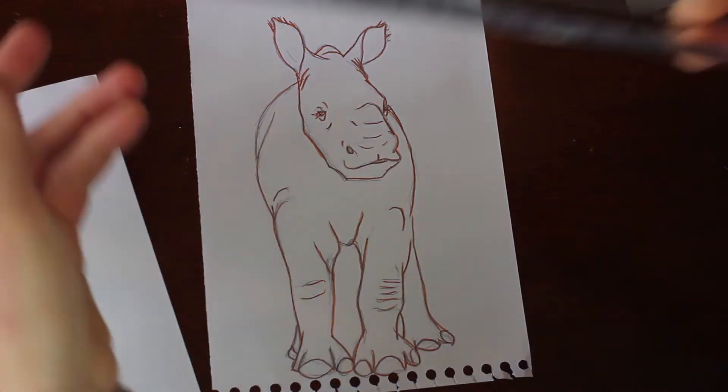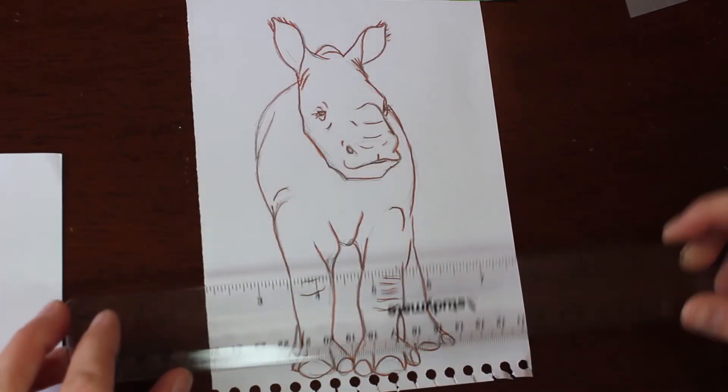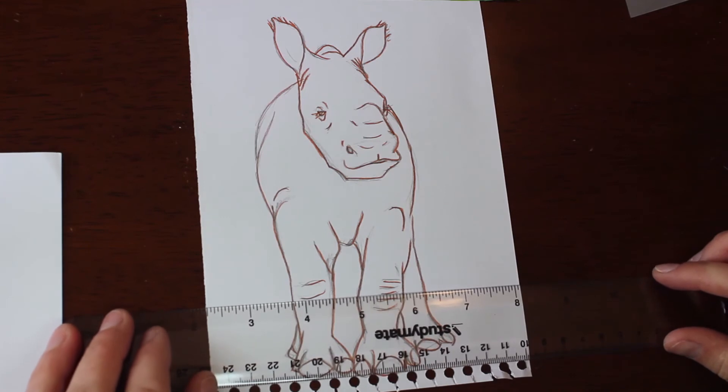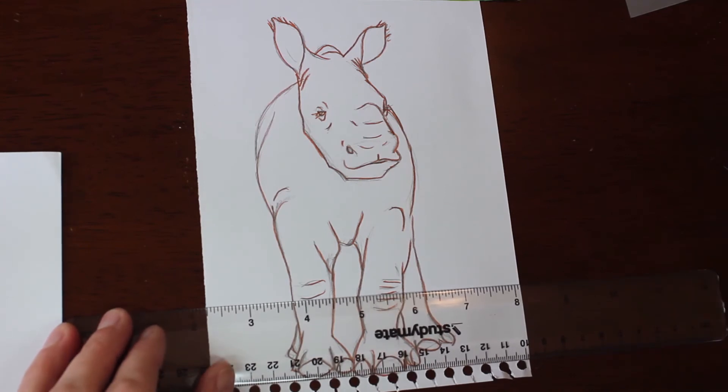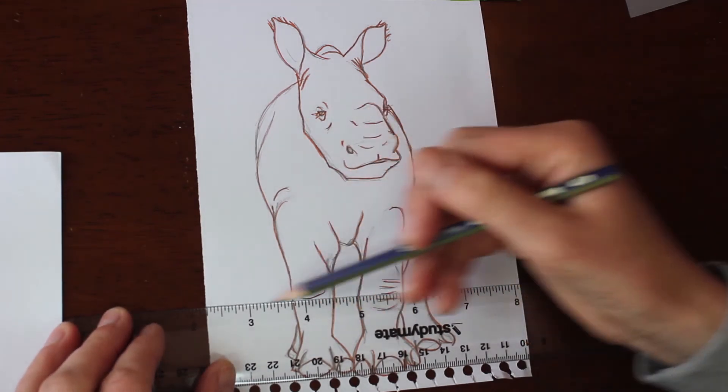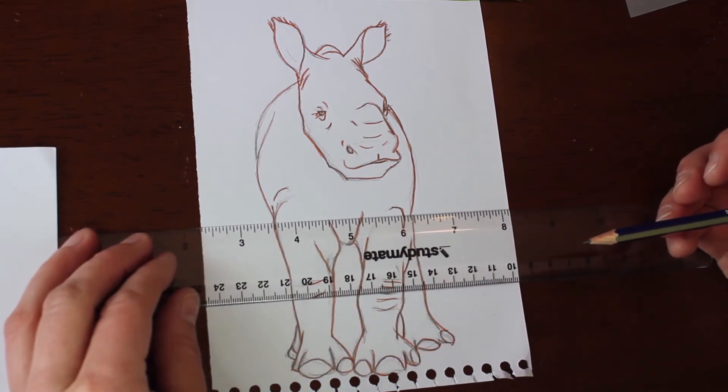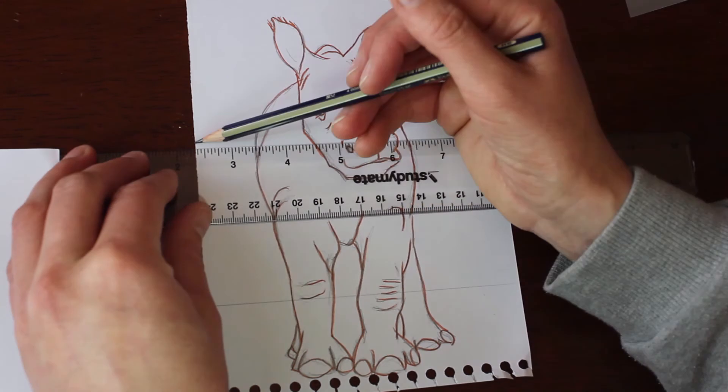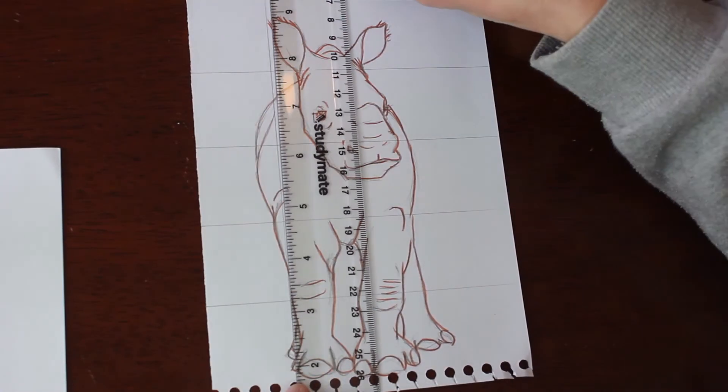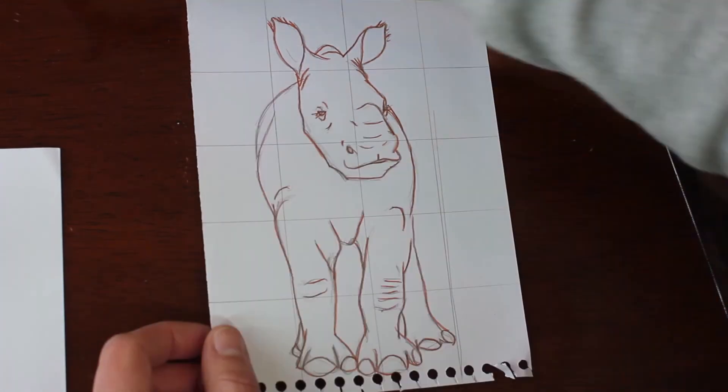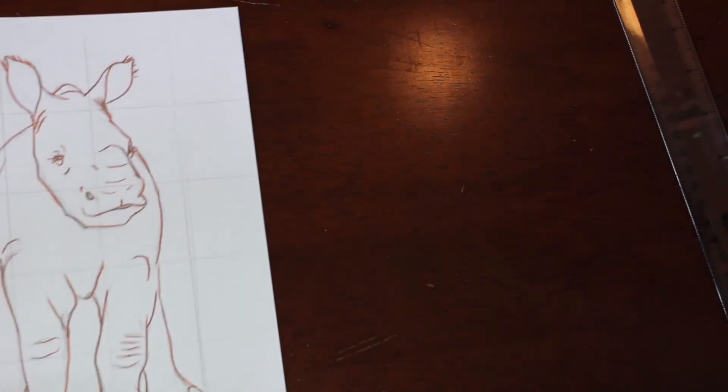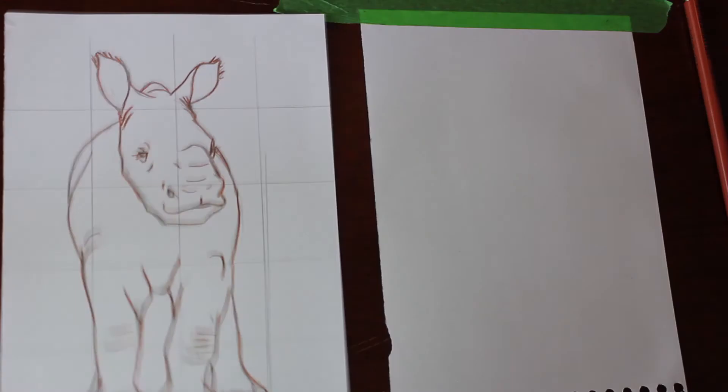The final method number five is the grid method. This is more commonly used for transferring a photo to a sketch form if you're drawing from a reference photo to get an accurate sketch. Draw even grid squares over your sketch. I've just used the width of the ruler to make that easy so I didn't have to measure anything. On your final piece of paper you want to replicate those grid squares.